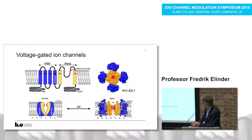This is the voltage-gated potassium channel — we have seen a lot about it during this meeting. This is based on the chimera structure KV1.2/2.1. As we heard yesterday, we have upstate or activated ion channel models, but there is a real lack of downstate or closed ion channel models. I will show a possible downstate in my next slide.